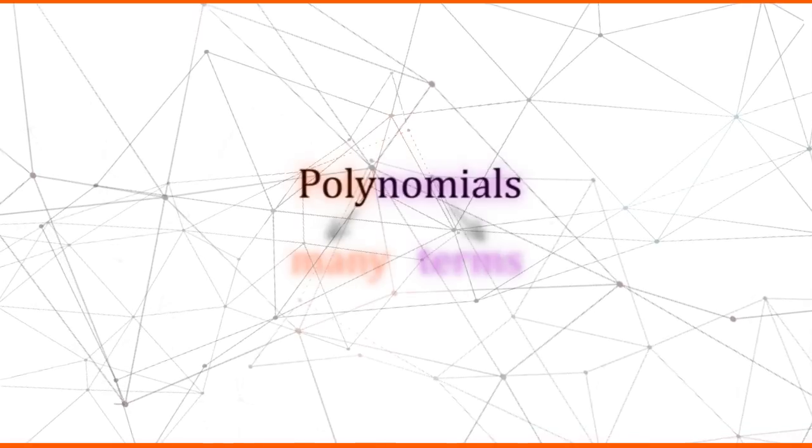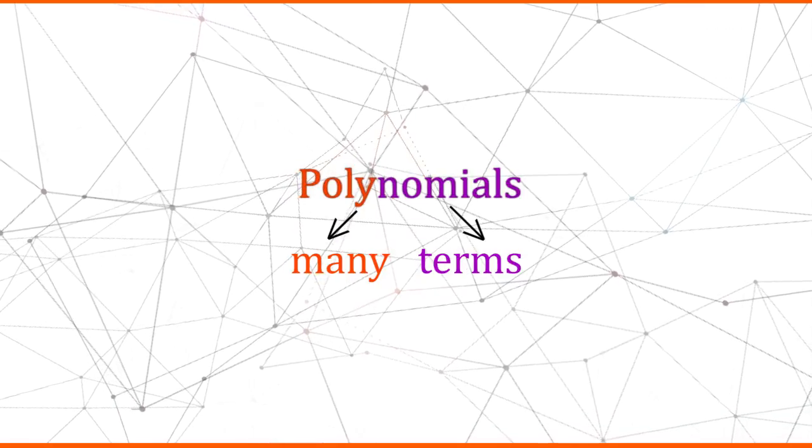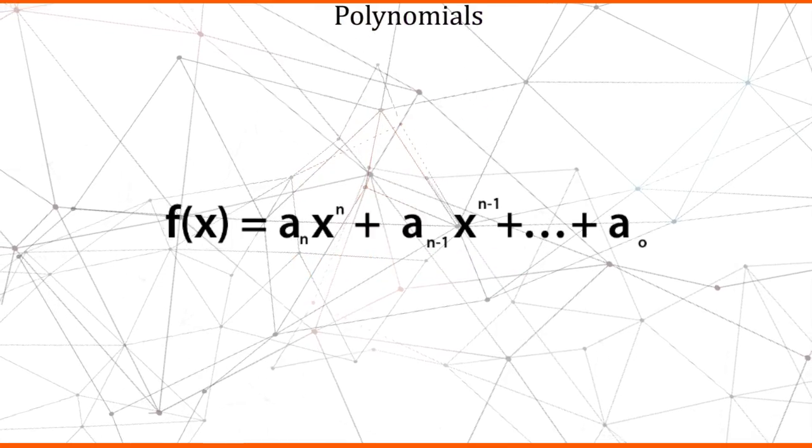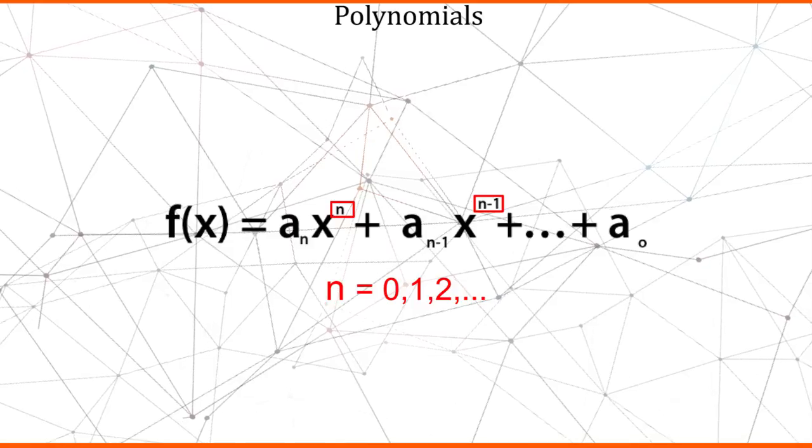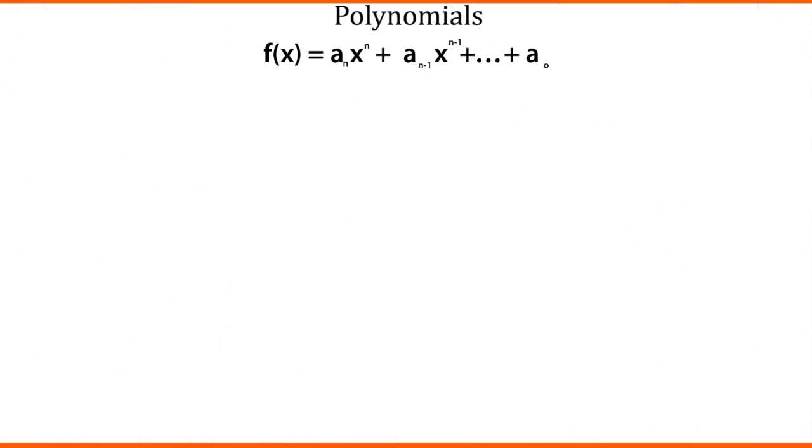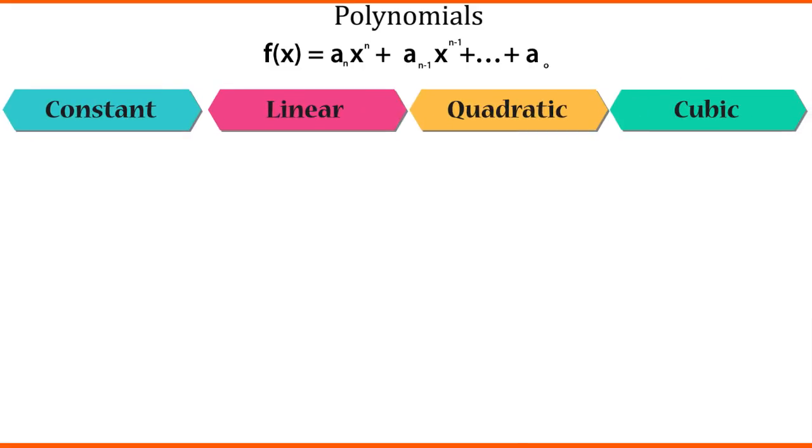So by now we should be knowing the meaning of polynomials which is many terms. Polynomial is an algebraic expression with power as whole numbers. There are different types of polynomials based on their powers such as constant, linear, quadratic, cubic, etc.